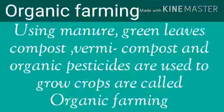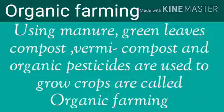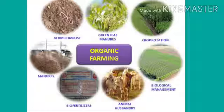Let us first understand what is organic farming. Using manure, green leaves compost, vermicompost and organic pesticides to grow crops is called organic farming.